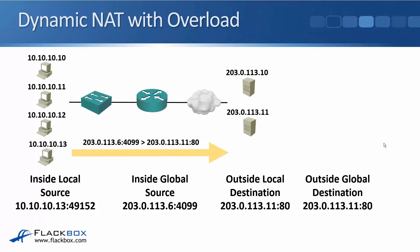Finally, another host, 10.10.10.13, sends traffic out using source port 49152. We've already used up all the addresses in our NAT pool, and with standard NAT this traffic would fail. But because we're using dynamic NAT with overload — a form of PAT — we can reuse the last IP address in the pool. So this host is also translated to 203.0.113.6, but the router ensures it uses a different source port number: 4099. When return traffic comes back to destination 203.0.113.6, port 4099, the router knows to send it to 10.10.10.13, port 49152, because it has that matching entry in its NAT translation table.